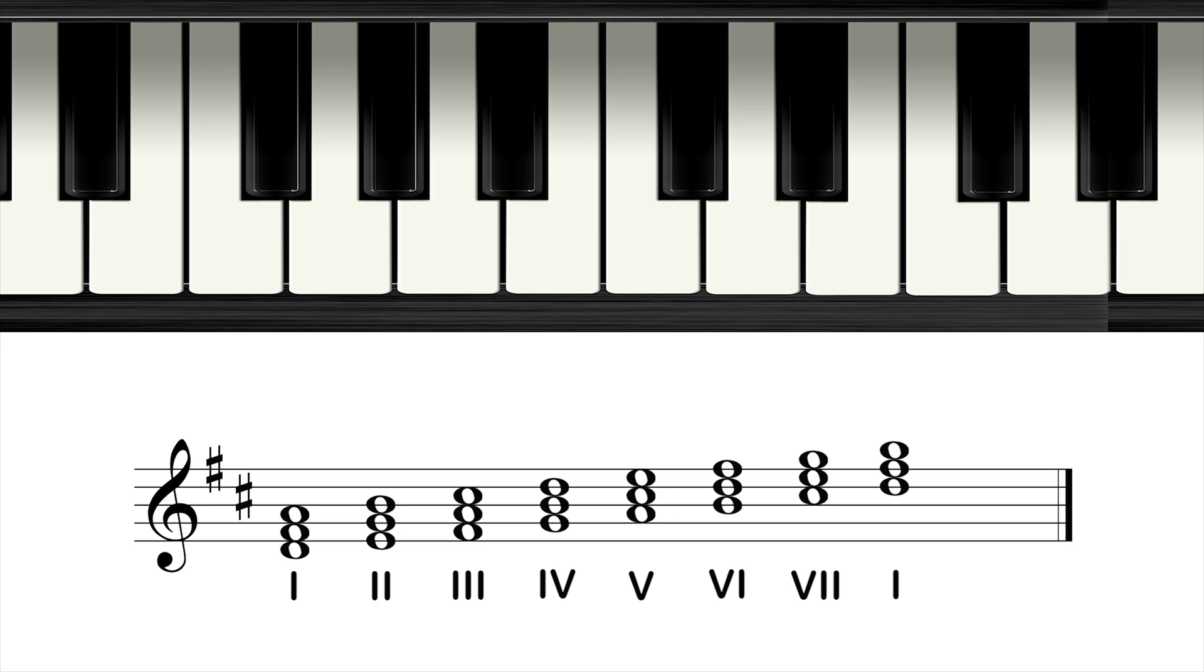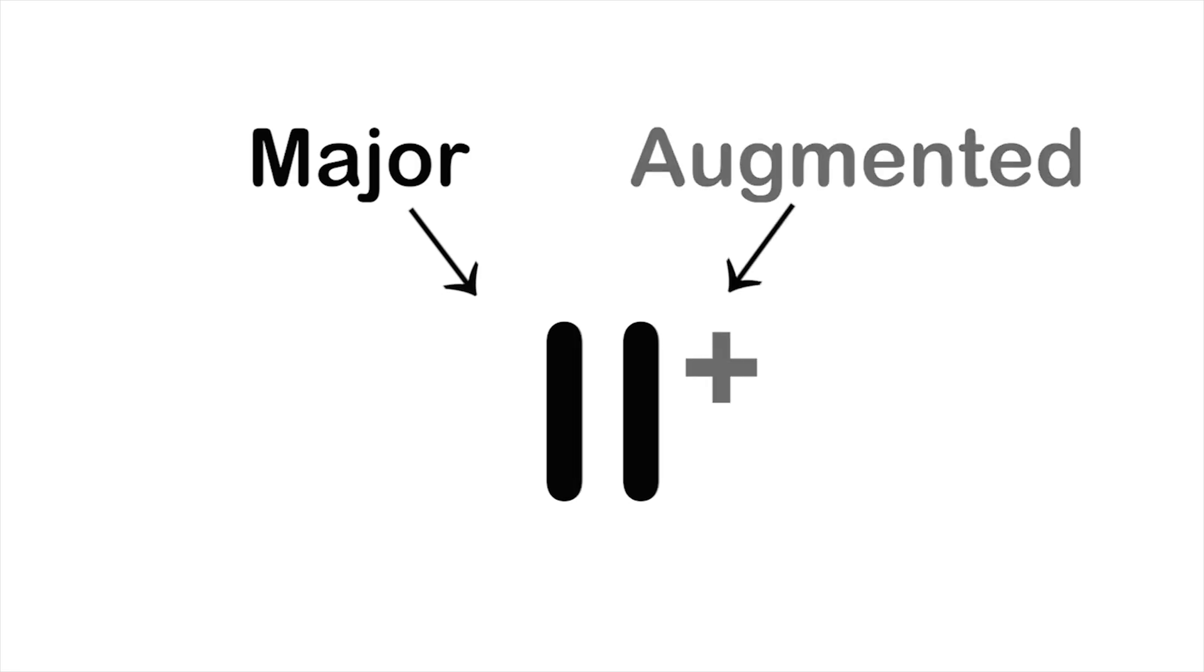The unique thing about Roman numerals is that they can be notated as uppercase and lowercase. The uppercase is used for chords that have a major third between the first and third of the chord, like major chords and augmented chords.